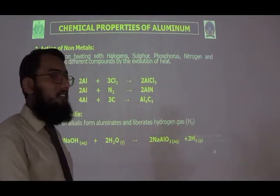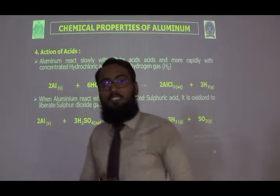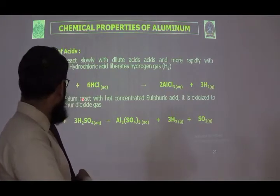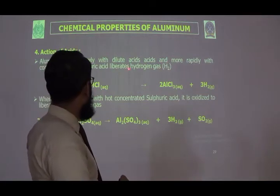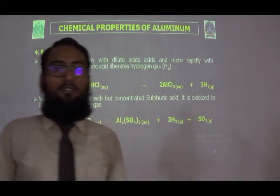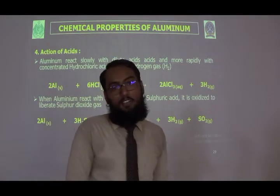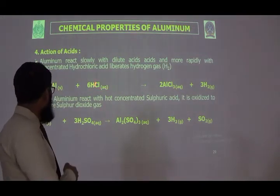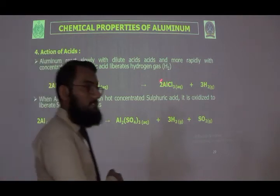The action of acid: aluminium reacts slowly with dilute acids but more rapidly with concentrated hydrochloric acid, liberating hydrogen gas. With dilute HCl, aluminium chloride and hydrogen gas are produced — this is a single displacement reaction. With concentrated sulfuric acid, aluminium sulfate and sulfur dioxide gas are produced because concentrated sulfuric acid acts as an oxidizing agent, converting to sulfur dioxide.